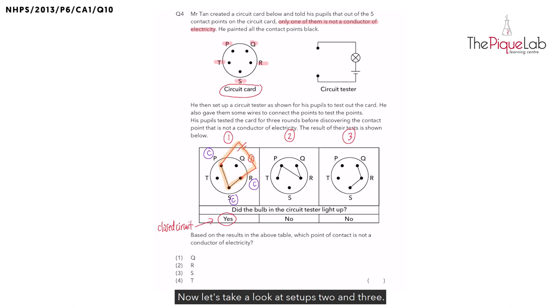Now let's take a look at setups 2 and 3. In both cases, the bulb did not light up. Was electricity able to flow through setups 2 and 3? No, it cannot. So we know that they are both open circuits. Let's write that down.